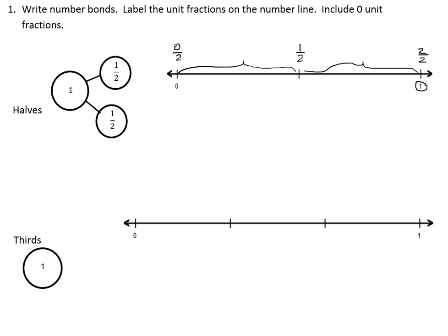The next question is looking at thirds. If we have thirds, we know that our whole has been cut into three equal pieces. So we'll show that in our number bond first. One whole is made up of three copies of one third.